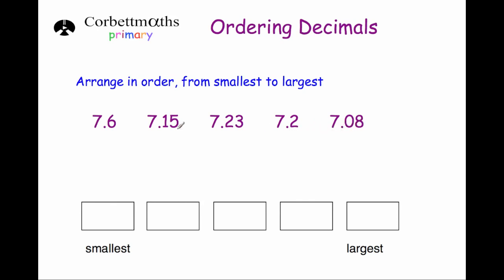Whenever I'm doing a question like this, I like to make all the numbers have the same number of digits after the decimal point. We've got 7.6 and 7.2 which are shorter, with only one digit after the decimal point. So we put zeros after them: 7.60 is the same as 7.6, and 7.20 is the same as 7.2, so we can compare them more easily.